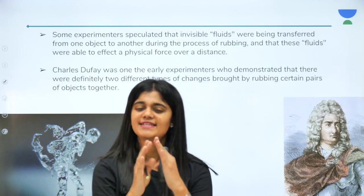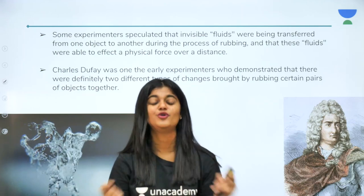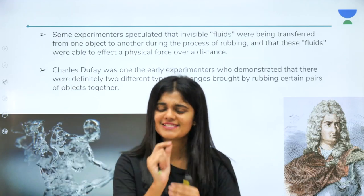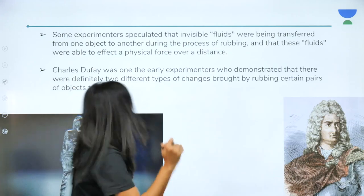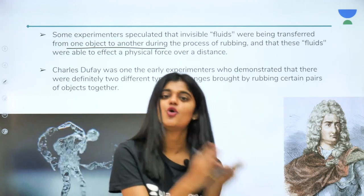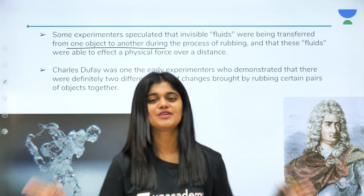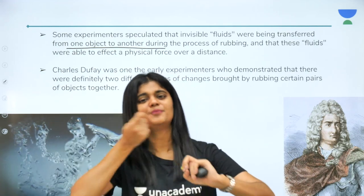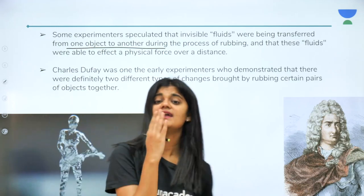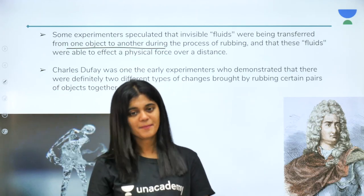From all these experiments, scientists concluded that in many objects there is some kind of invisible fluid. Otherwise how can attraction and repulsion happen just like this? There is some invisible fluid that is transferred from one object to another during the process of rubbing. Something must be happening — if you just rub two objects, some fluid or something must be transferring from one object to another. These invisible fluids were able to effect a physical force over some distance.